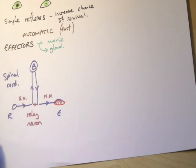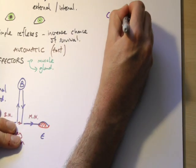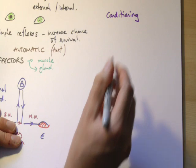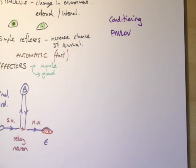Now conditioning, which is linked to this, came from a set of experiments done by a Russian scientist called Pavlov. And what he did...